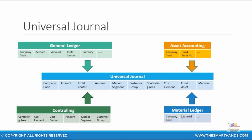The material ledger information such as material code and so on is also copied over. As well as your controlling information such as your controlling area, cost element, cost center, and so on — including the profitability analysis segments like market segment, customer group, and whatever other profitability segments you have — will also get copied over to the universal journal.